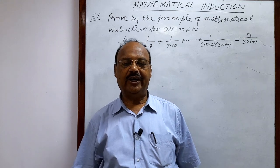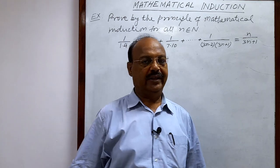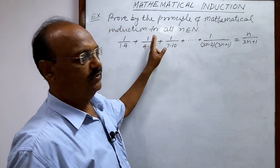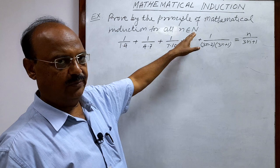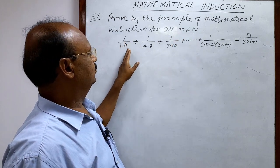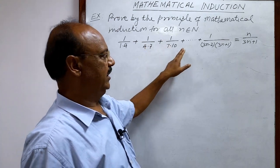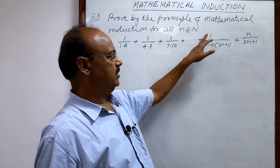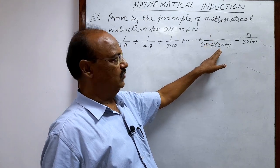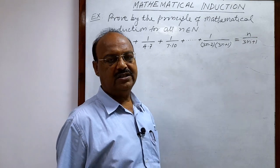Here we will see a very interesting and important question from the chapter mathematical induction. The question is: prove by the principle of mathematical induction for all n belonging to the set of natural numbers — 1/(1×4) + 1/(4×7) + 1/(7×10) + ... up to the nth term 1/((3n−2)(3n+1)) is equal to n/(3n+1).